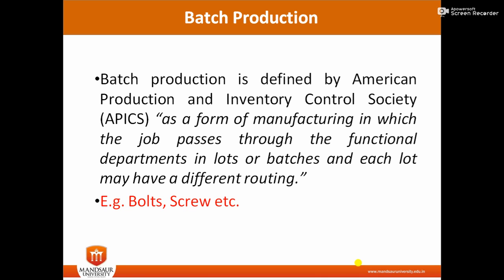A simple example of batch production is bolts and screws. Suppose you have an industry manufacturing screws — you produce a screw of 1.5mm at a particular time period. After completion of that batch size, you start production of 2.5mm nut bolts. You decide the batch size, complete it, and only then start the next batch. This is batch production.